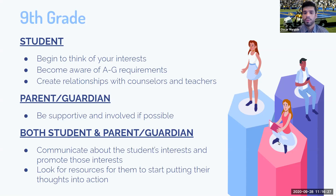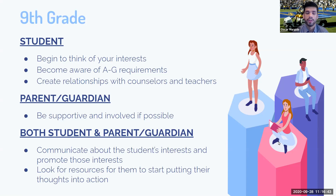Definitely become aware of the A through G requirements, as Brenda mentioned, and make sure you're getting a C or better in those classes so you can maintain eligibility for CSU and UC. Start creating relationships with your counselors and teachers — this is very important, especially as you get into your 11th and 12th grade years. Keep track of your grades and see what eligibilities you have and what requirements you're meeting.